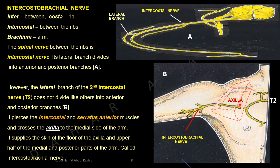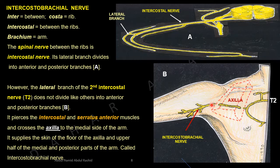The medial wall of the axilla is formed by the serratus anterior muscle. The lateral branch of the second intercostal nerve, T2, passes through the medial wall — the serratus anterior muscle — goes through the axilla, and comes toward the upper part of the arm. This nerve supplies the skin of the floor of the axilla and also the skin of the medial and posterior surfaces of the upper part of the arm. It is called the intercostal brachial nerve.